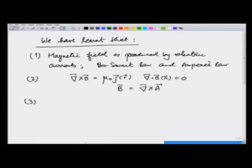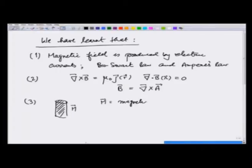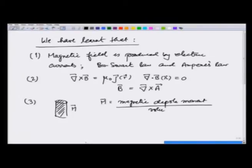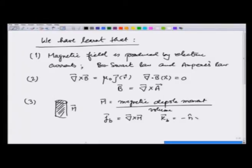Third, we learnt that when we take a magnetic dipole or a magnetized medium with magnetization M — where M is the magnetic dipole moment per unit volume — this is equivalent to a bound current Jb which is curl of M, and a surface current K_bound which is M × n̂ (with a minus sign). We solved certain examples using these.